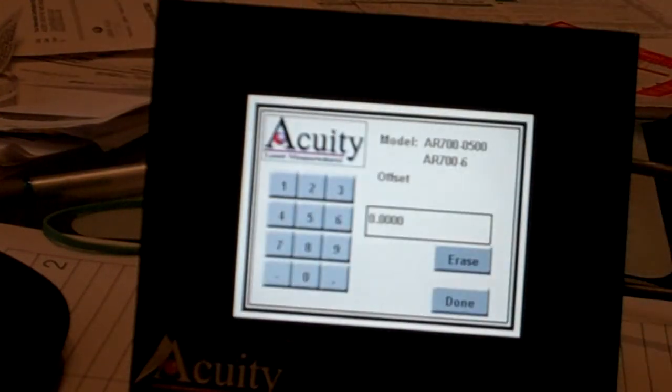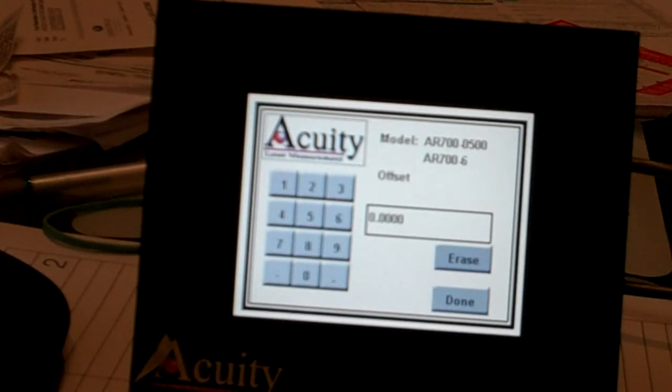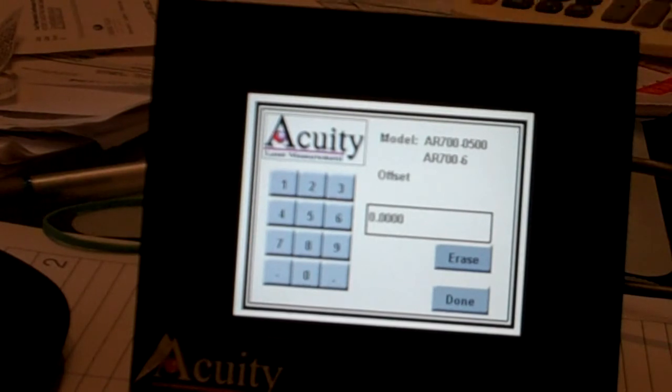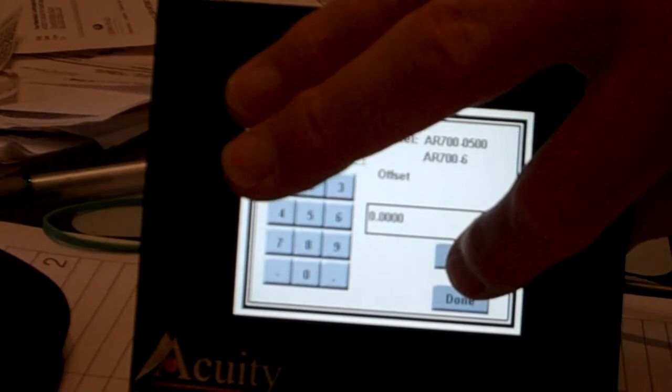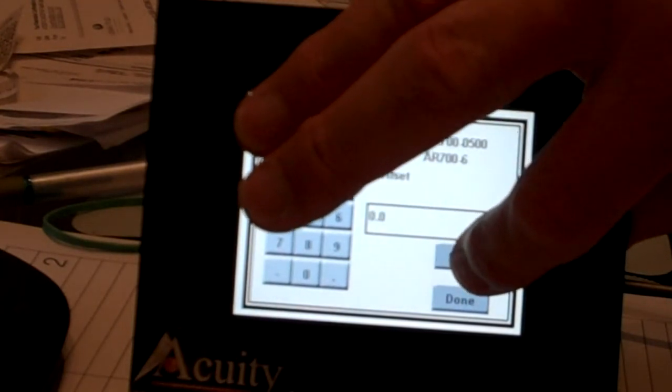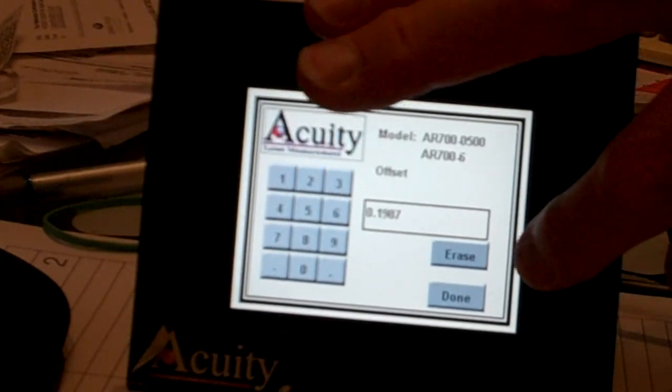And now I'm going to plug in an offset. And in this case we're going to use that five millimeter. And of course we know that five millimeter is approximately 198.7 thousandths. So let's go back here and erase this offset and put in 198.7 thousandths.